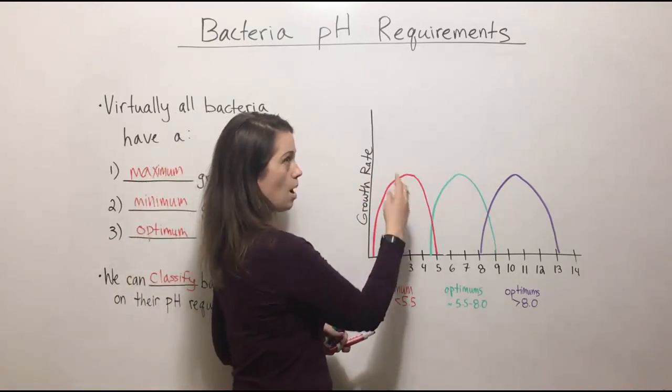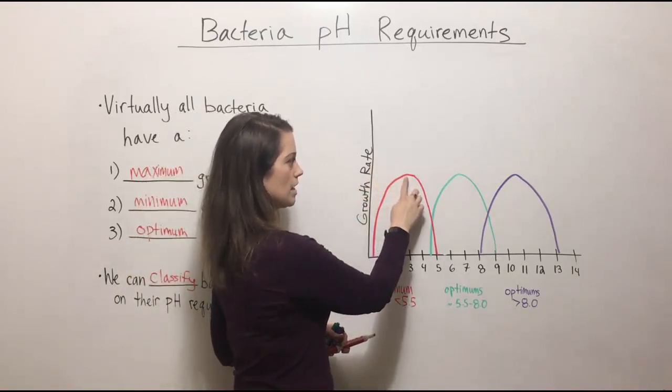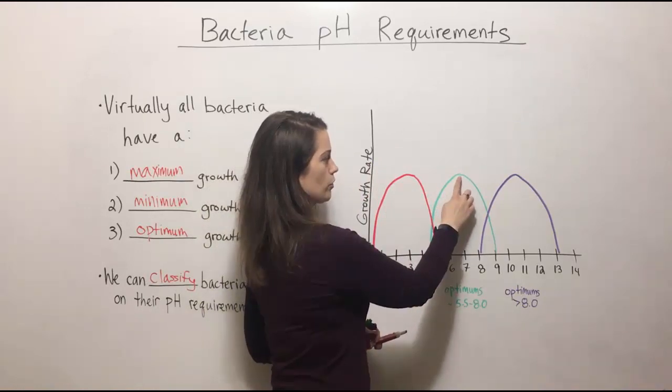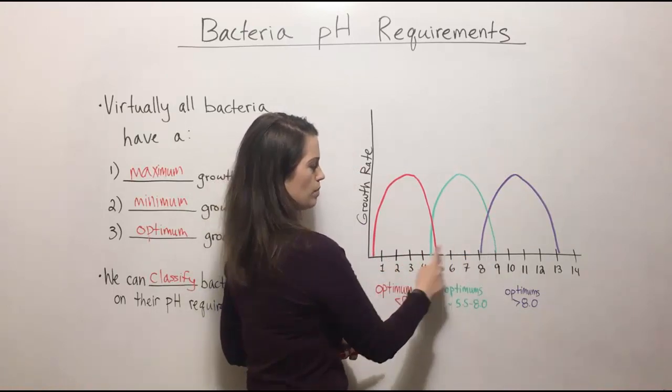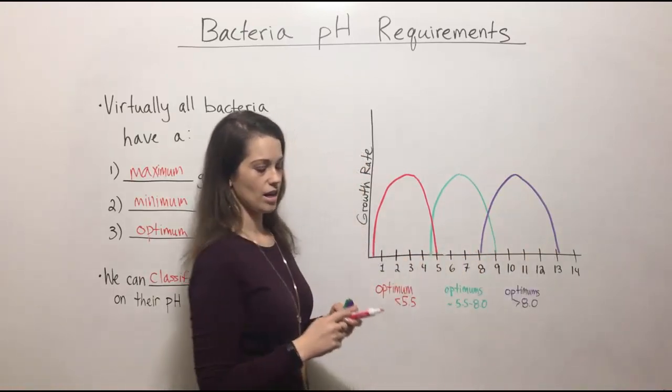So the optimum growth for this group is here, optimum growth for this group is here, optimum growth for this group is here. Then the maximums and the minimums would be at either end of that curve.